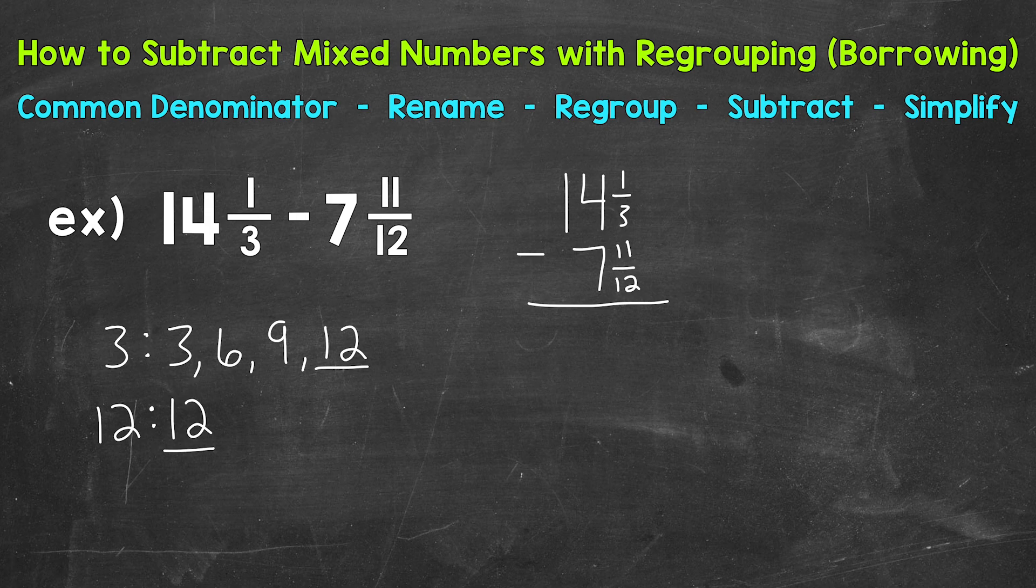Let's start with 14 and 1/3. So this is going to equal 14 and how many 12ths? We don't do anything with the whole number. That doesn't need to be renamed. We're only renaming the fractional part. So let's use equivalent fractions in order to rename here.